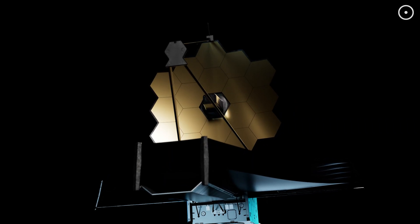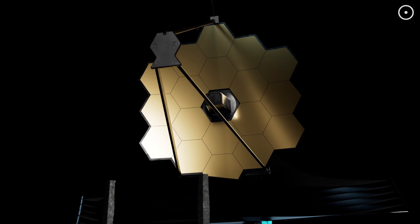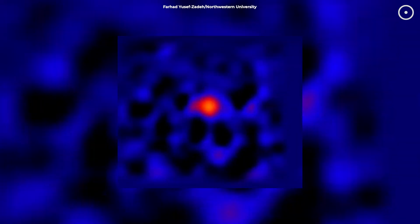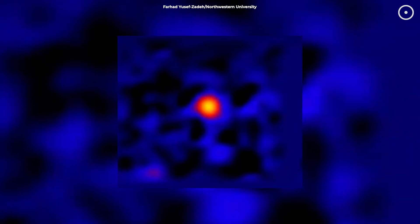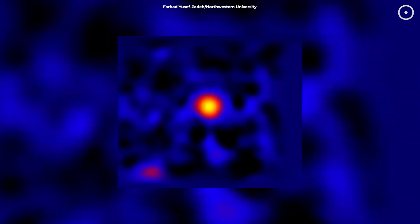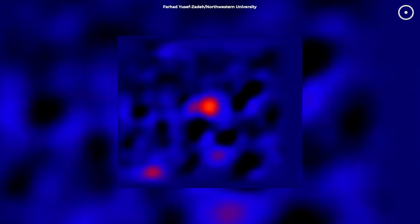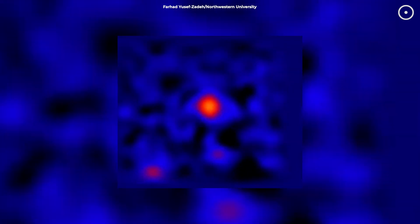But using Webb's incredible infrared vision, scientists didn't just take a single snapshot. They watched this cosmic giant for 48 hours spread across an entire year. Every single time they looked, there was something new happening—five to six major flares every day. Think of them as cosmic bass drops.